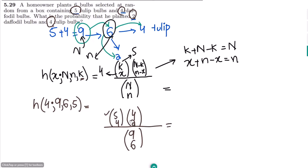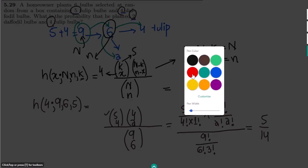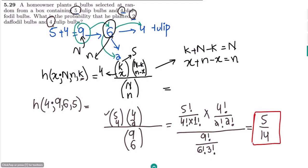Applying the combination formula: the numerator gives us 5 factorial divided by (4 factorial × 1 factorial), multiplied by 4 factorial divided by (2 factorial × 2 factorial). The denominator is 9 factorial divided by (6 factorial × 3 factorial). Computing this, the answer is 5 divided by 14, and that is the solution to our question.